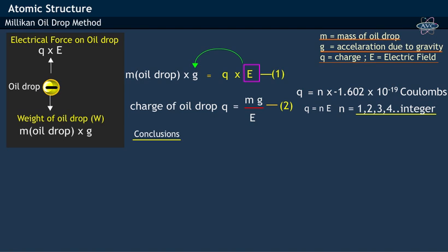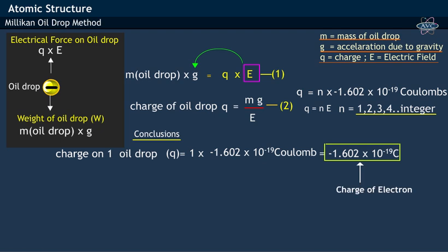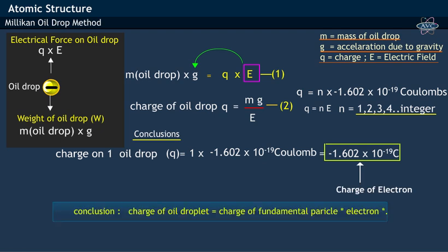From this experiment, Robert Millikan has concluded that this fundamental unit of charge on one oil droplet, which equals to the value −1.602 × 10⁻¹⁹ coulombs. This is nothing but the charge of electron.